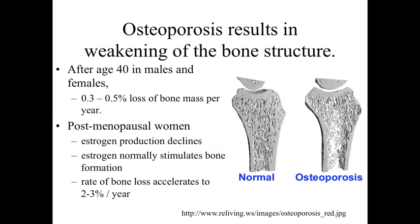If we take a look at what occurs normally in the body, we've got this continual balance going on in the bone remodeling process — a continued balance between bone resorption by the osteoclasts and bone deposition by the osteoblasts — which is a normal process occurring throughout a lifetime. What we see in older individuals, generally after about age 40 in both males and females, is a gradual loss in bone mass. We're producing less bone but eroding bone away, shifting that balance point, causing a weakening of the bone structure that could ultimately develop into something like osteoporosis.